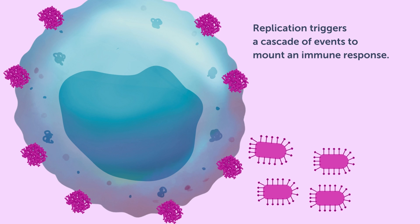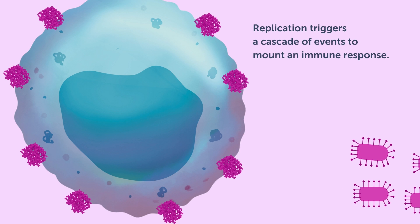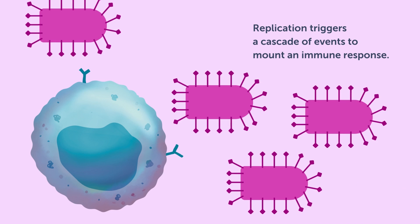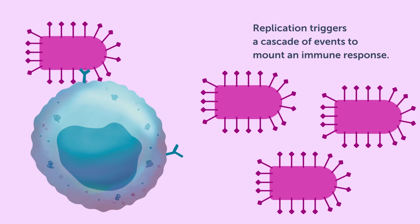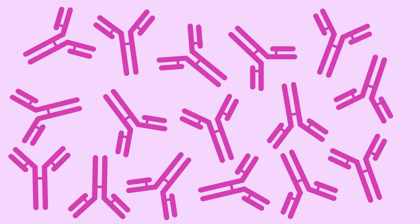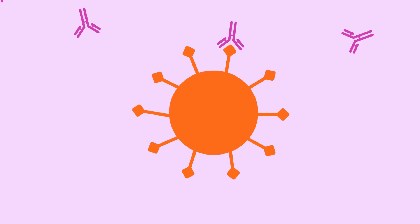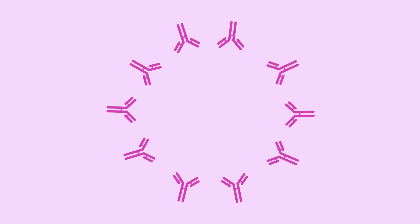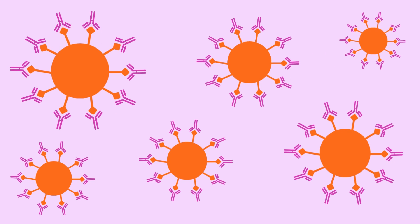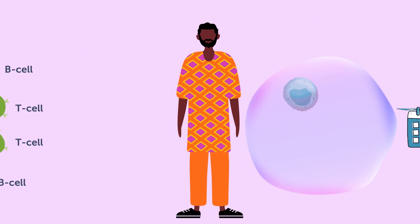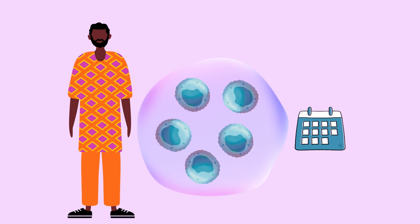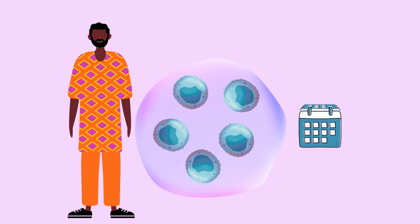These VSV particles go on to repeat the process several times to increase the effectiveness of the immune response. As a result, your immune system responds by producing antibodies that can directly bind to the target pathogen to block infection. Your immune system also responds by producing other helpful immune cells, such as T cells.